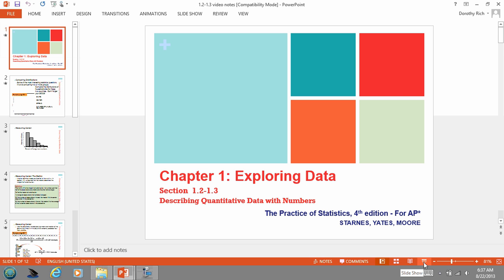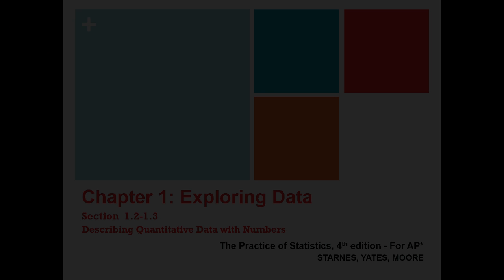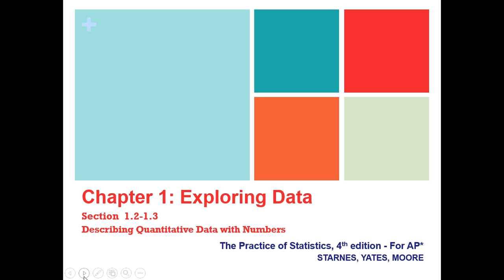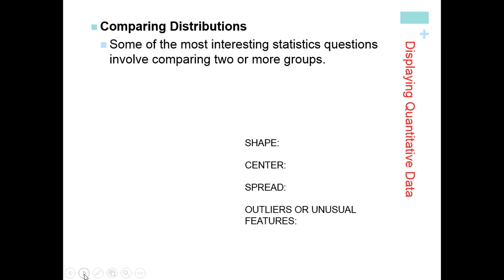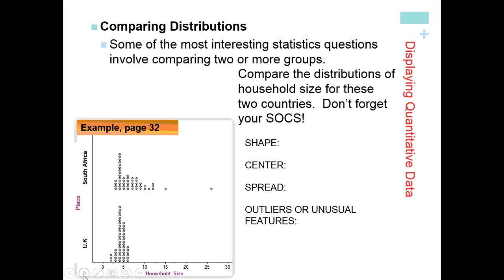Hello, this is a video on sections 1.2 and 1.3, describing quantitative data with numbers. I'm going to highlight some important things — a few examples from these two sections. This example is on page 32, and it compares data from a census of sizes — the number of people living in households in South Africa compared to the UK.